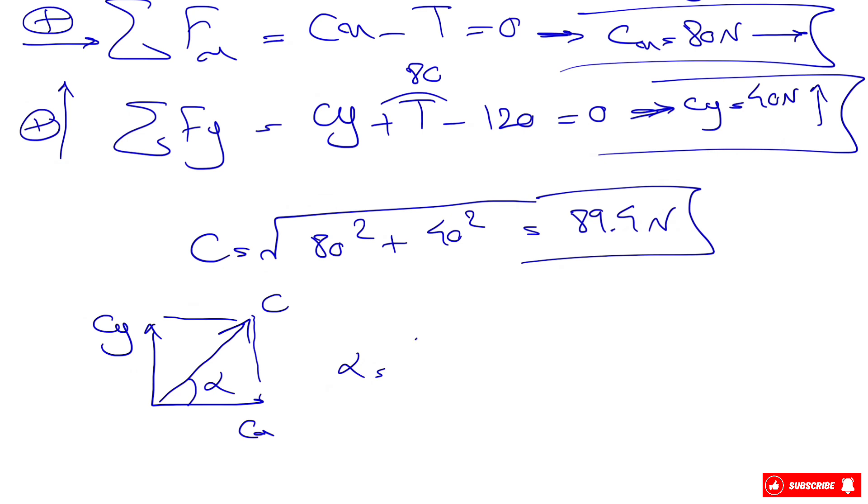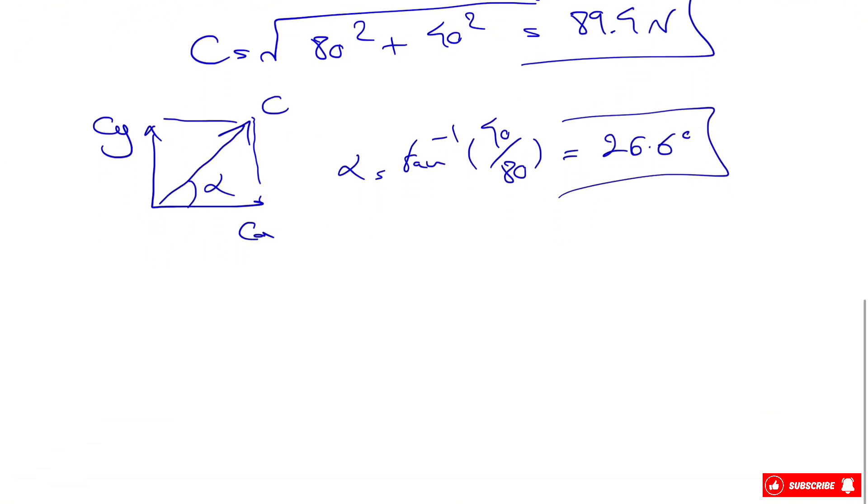The angle alpha is the inverse tangent of Cy divided by Cx, which is 40 divided by 80, giving us 26.6 degrees.